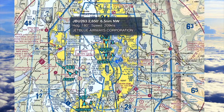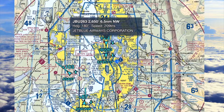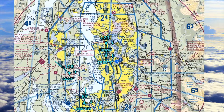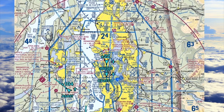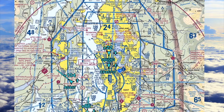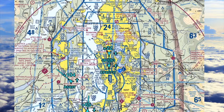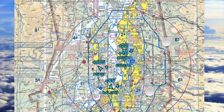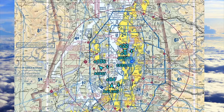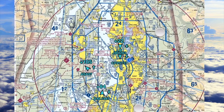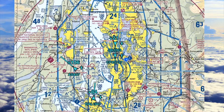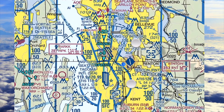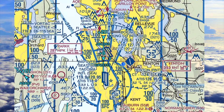JetBlue Airways, Alaska Airlines, and Delta Airlines — this page is really cool. It's just fun to look at the traffic sometimes. It's also very helpful when you're in the plane and you don't see the traffic outside, but you know where they are by looking at this map.